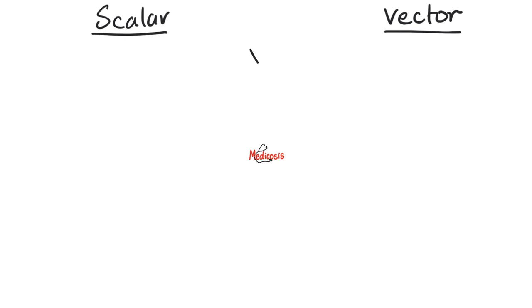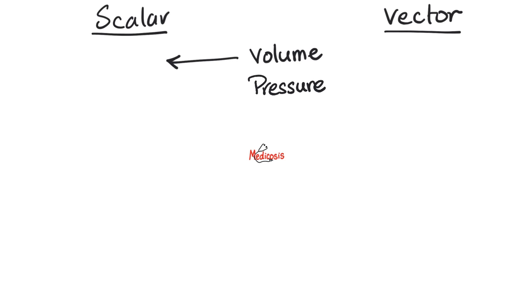Let's do some more. Scalar has magnitude only; vector has magnitude and direction. Let's start with volume — the volume of this bottle is 1 liter. Not 1 liter east, so volume is a scalar quantity. Let's try pressure — the pressure in your big arteries during systole of the heart is about 120 millimeters of mercury. It's just millimeters of mercury — not up, down, east, or west. So pressure is a scalar entity. Let's try area — the surface area of a square is 5 square meters. No east or west. Scalar.